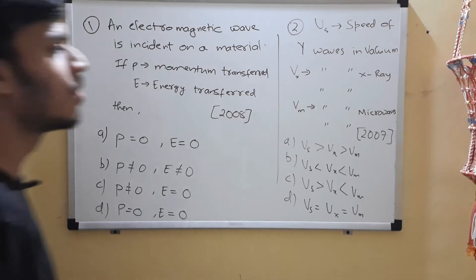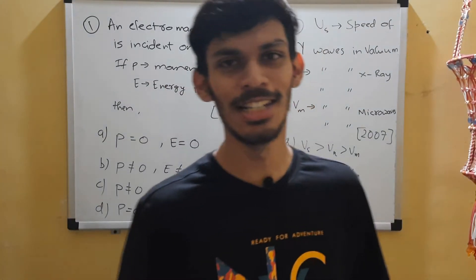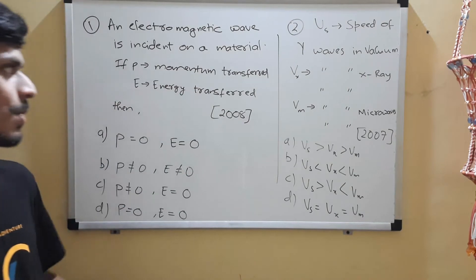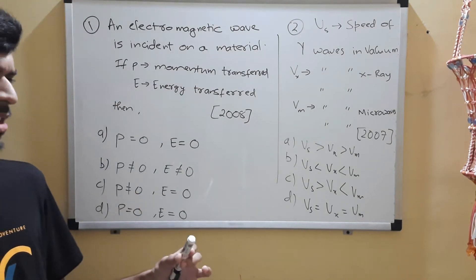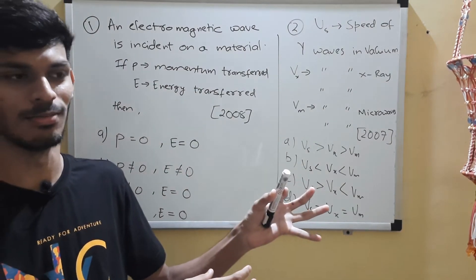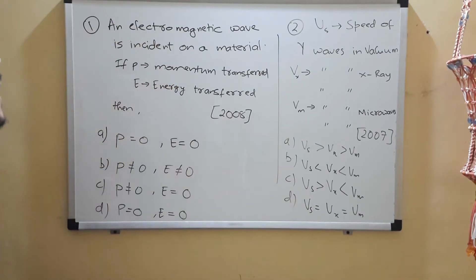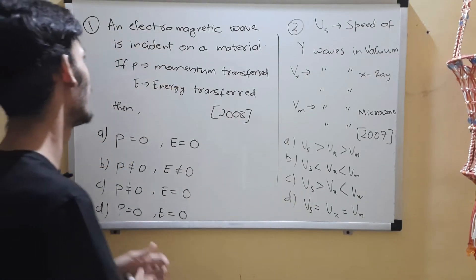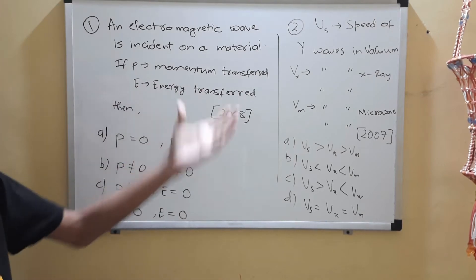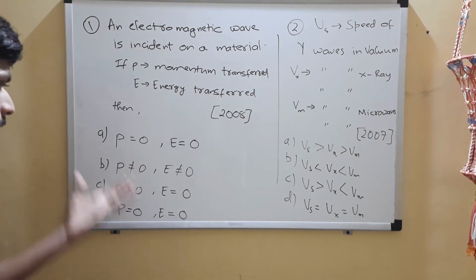Questions 1 and 2 — no question categorizing today. Take a question as a question. Question 1: An electromagnetic wave is incident on a material. If P is the momentum transferred and E is the energy transferred, then what is the relation?